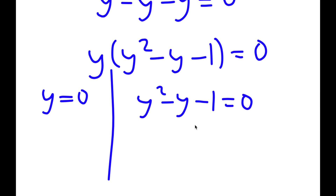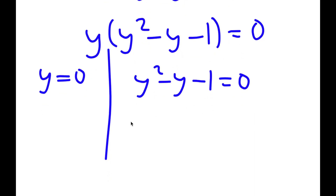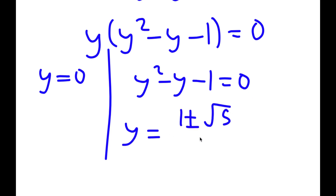This gives me two equations: y equals 0, and y squared minus y minus 1 is equal to 0. For y squared minus y minus 1 equals 0, I'm going to use the quadratic formula. Doing so gives y is equal to 1 plus or minus the square root of 5, all over 2.